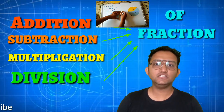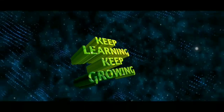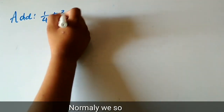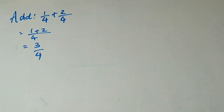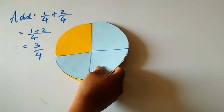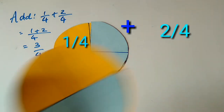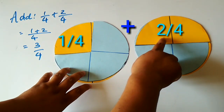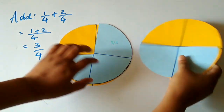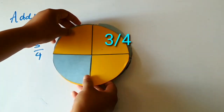Let us start the learning session. The sum is 1/4 + 2/4. Since the denominators are the same, we directly add: 1 + 2 upon 4, which equals 3/4. Now let us see the same sum in activity form. The yellow part represents 1/4, and 2 yellow parts out of 4 represent 2/4. If we add them, we get 3/4.